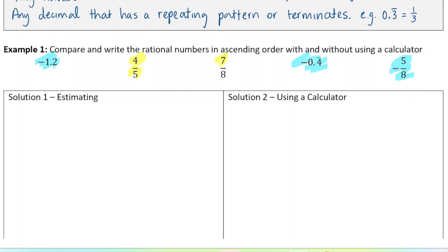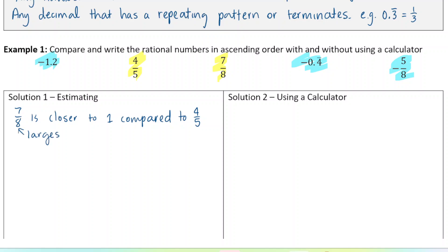So these are the two positive numbers. 7 out of 8 is closer to 1 compared to 4 over 5. When the denominator is larger, we're only 1/8 away from 1 with 7 over 8, but we're 1/5 away from 1 with 4 over 5. So 7/8 is the largest number in the list, and 4/5 is the second largest.